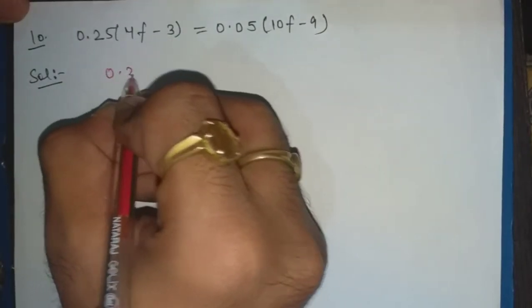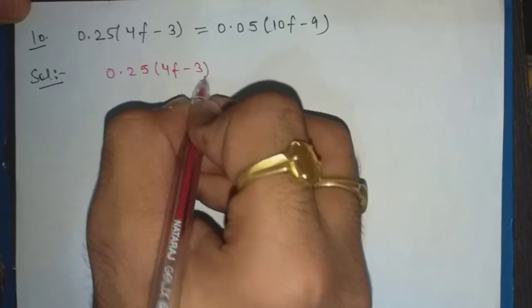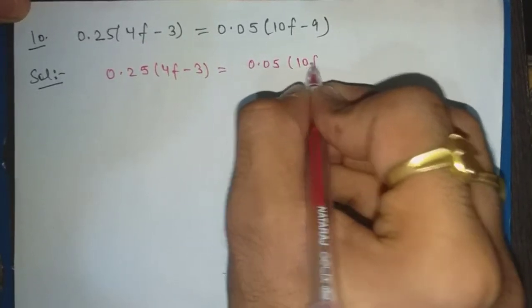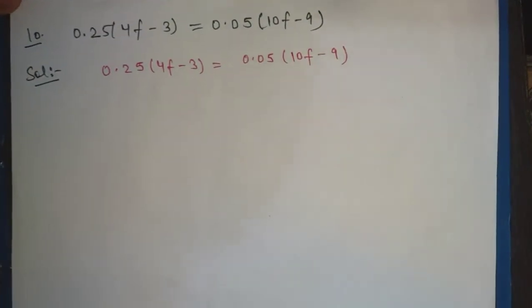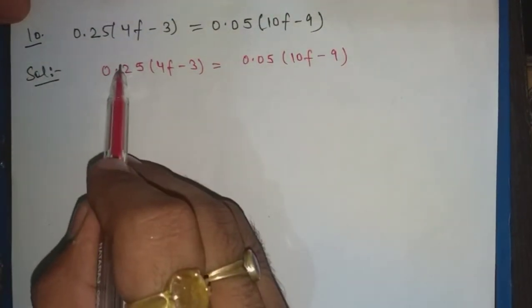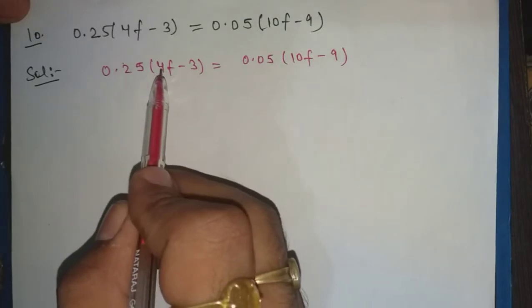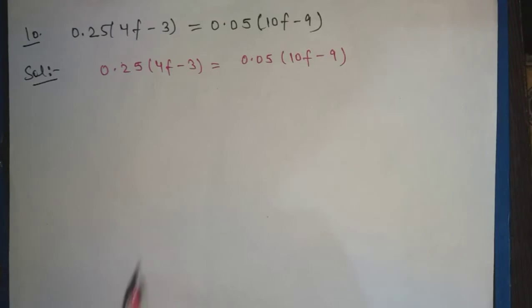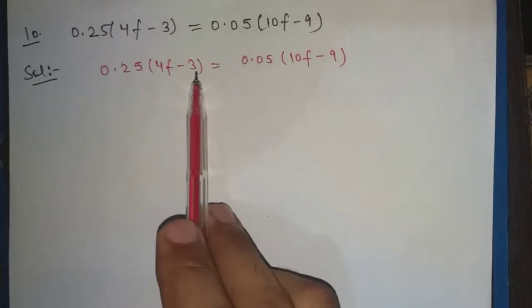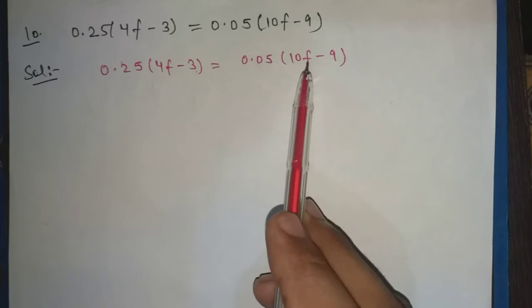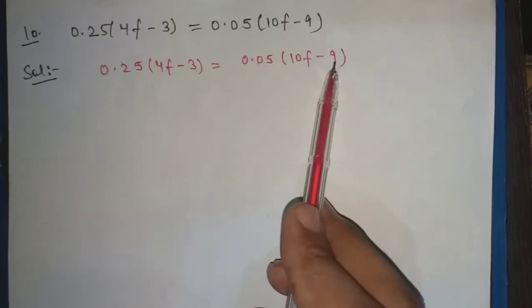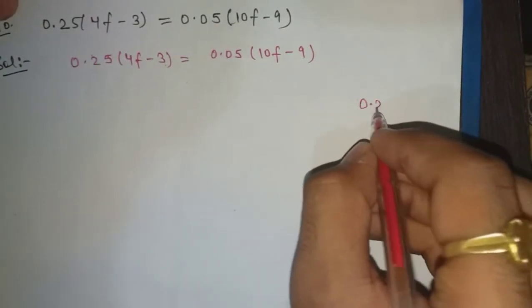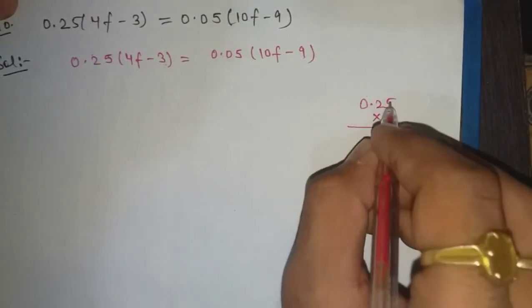We write the equation as 0.25(4f - 3) = 0.05(10f - 9). This is your statement. First you will multiply 0.25 with 4f, then multiply 0.25 with 3, then 0.25 with 10f, then with 9. So first let's see 0.25 multiplied by 4.